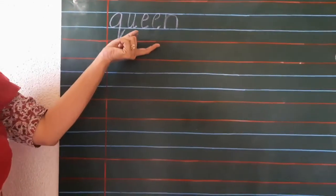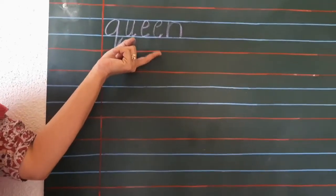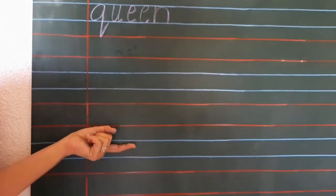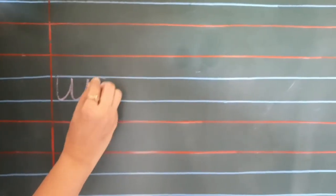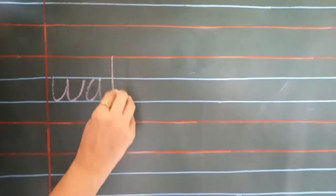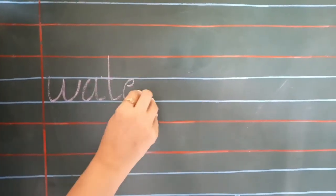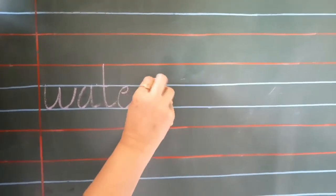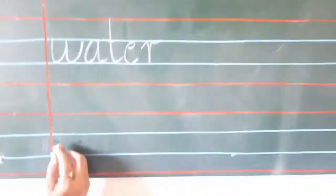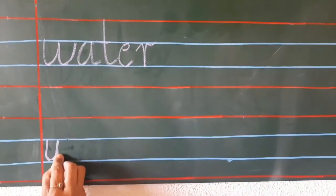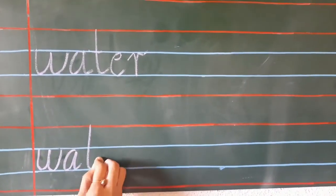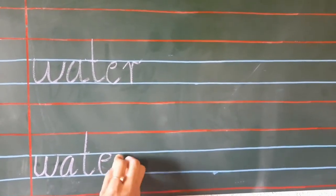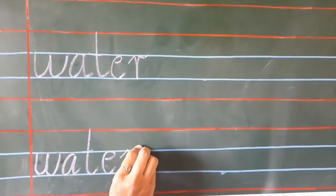After writing the spelling of queen four times and drawing the picture, we will leave a line and write the next word. And the next word is water, W-A-T-E-R.